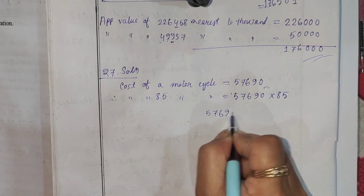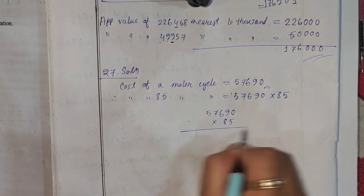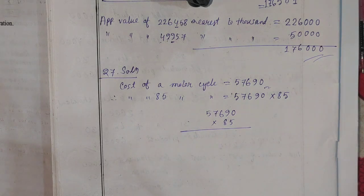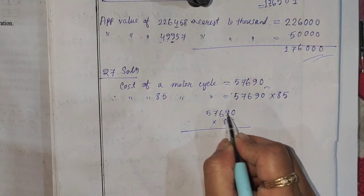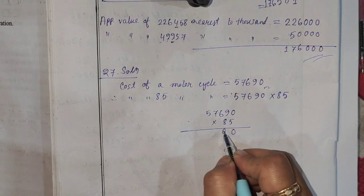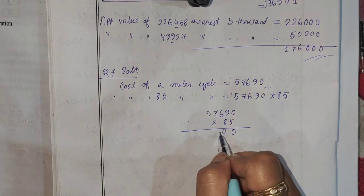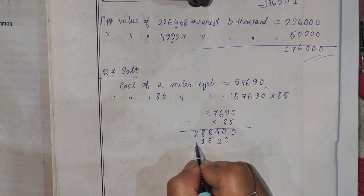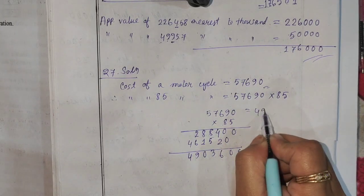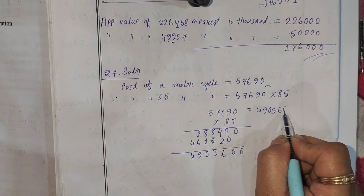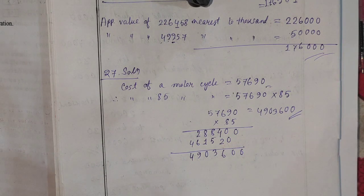590 × 85. That comes to the building calculation: 8,500 and 5,500. 1,54,300. It is 49,03,600 — that's our answer.